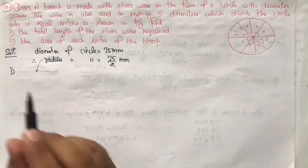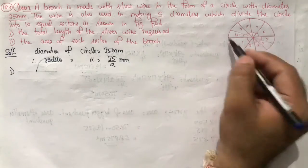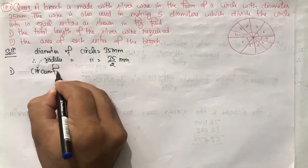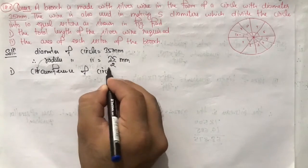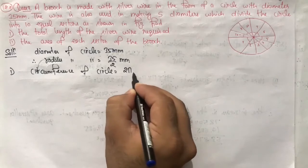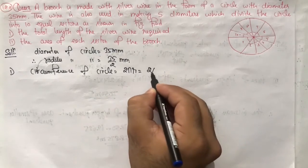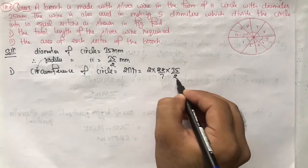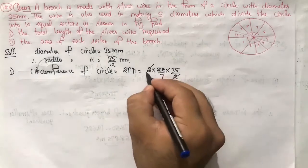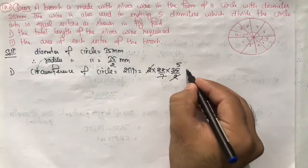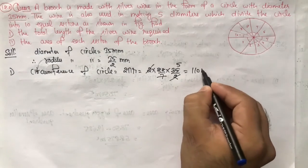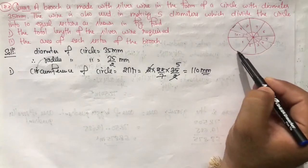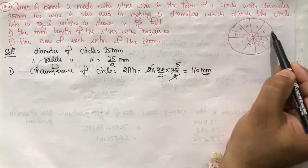First we find the circumference. Circumference of the circle is equal to 2πr, which is equal to 2 × 22/7 × r. R value is 35 upon 2. 2 and 2 cancel, 7 and 35 cancel to 5. The multiplication is 110 mm. So the circumference requires 110 mm of silver wire.